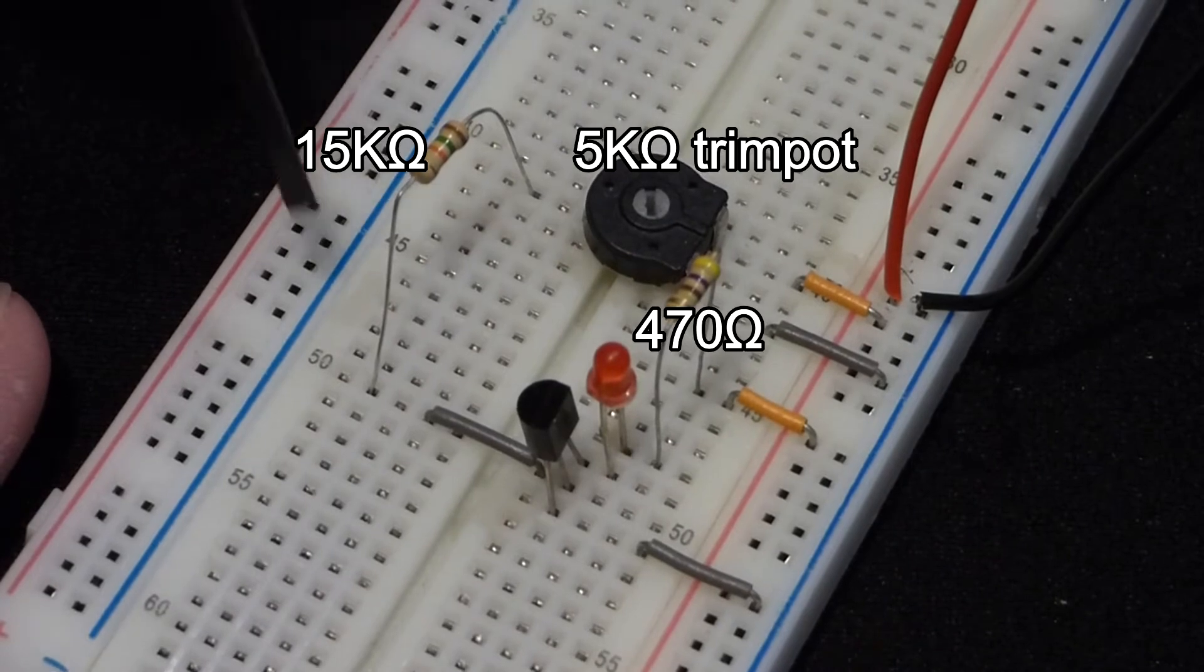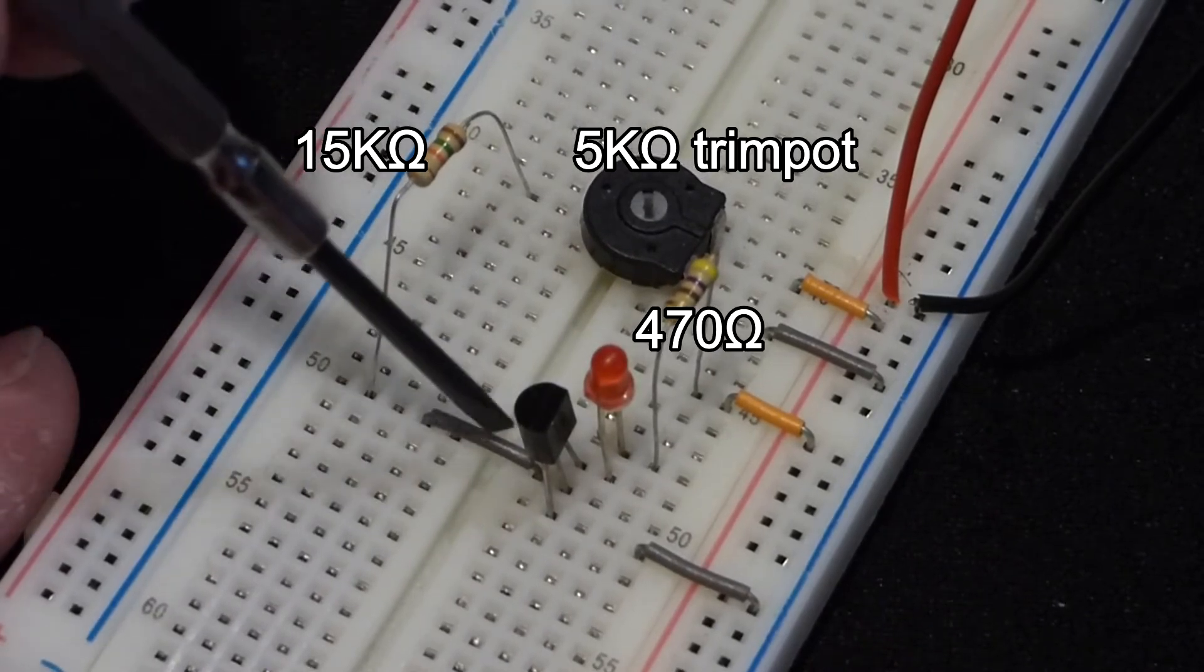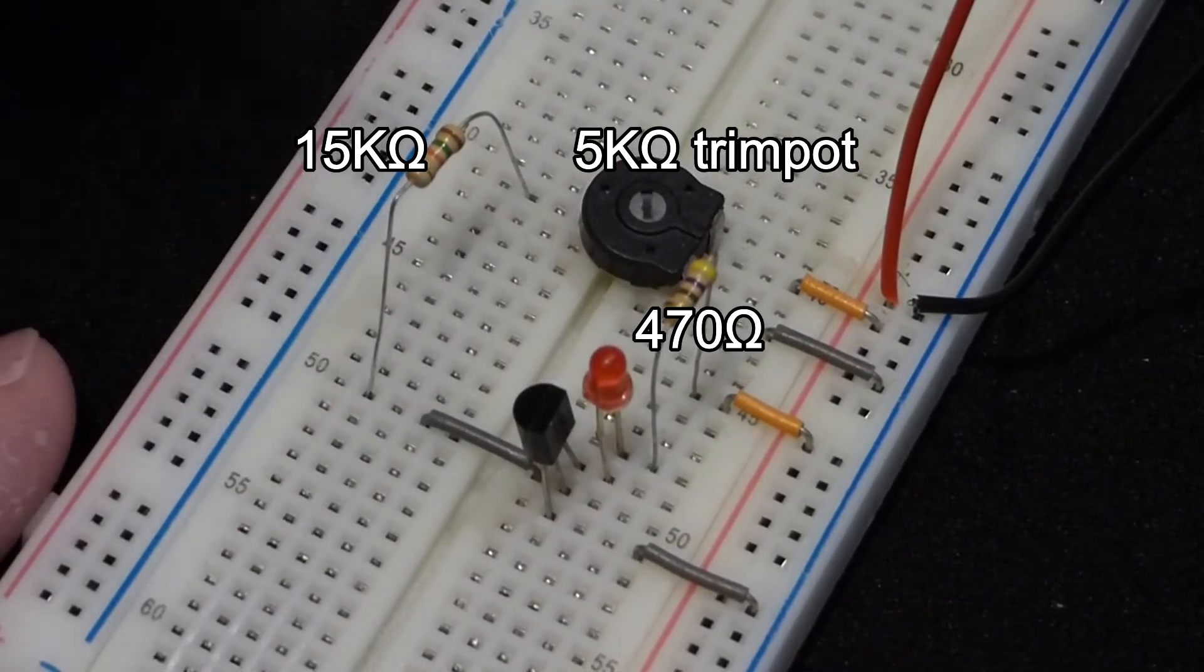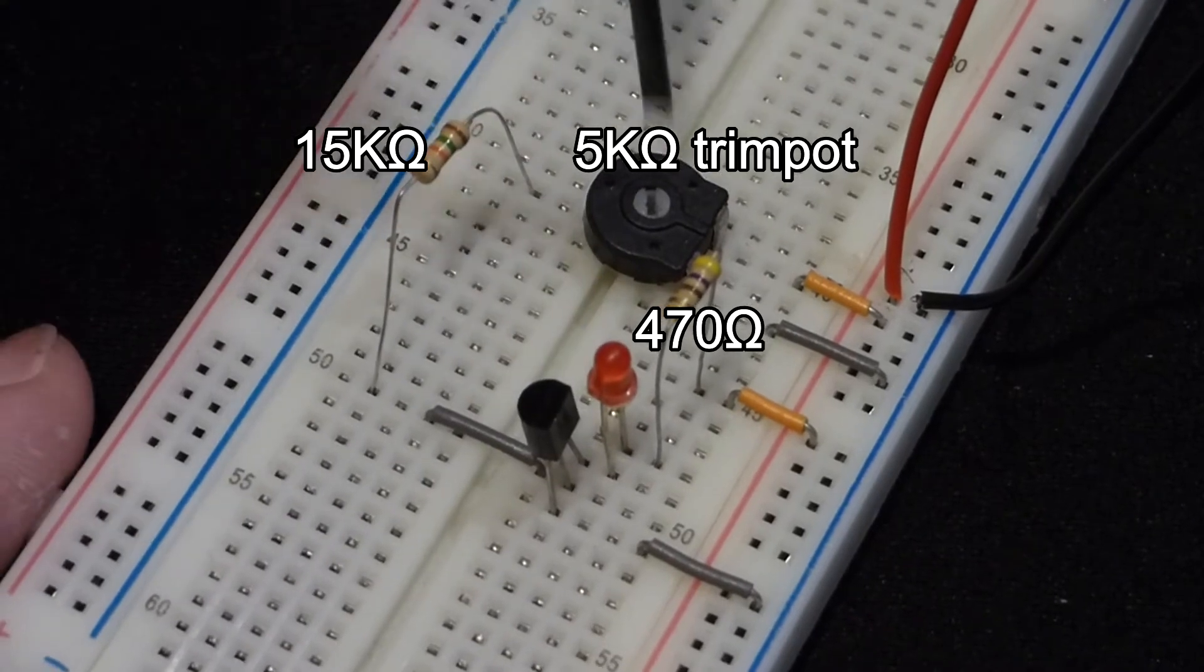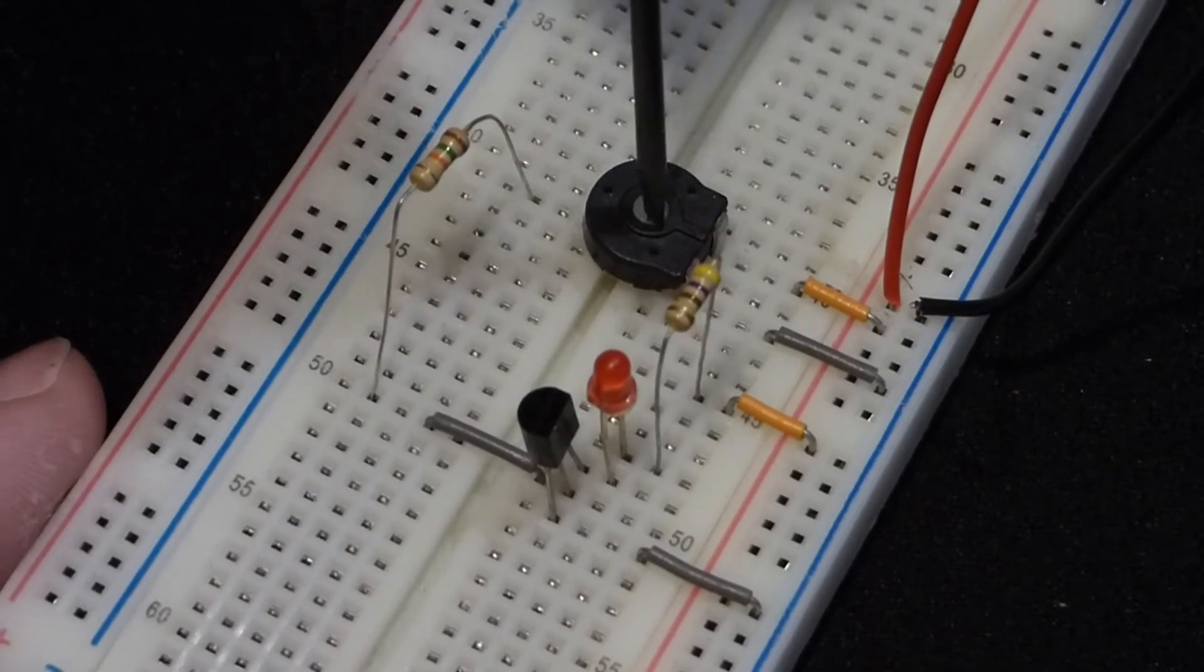Now there's a protective resistor that comes to the base of the transistor. So this will set the voltage that will control the transistor.